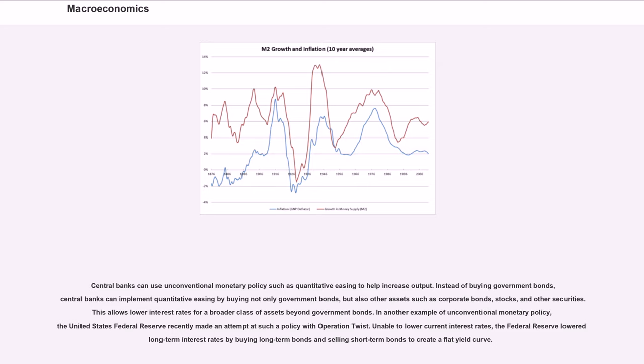In another example of unconventional monetary policy, the United States Federal Reserve recently made an attempt at such a policy with Operation Twist. Unable to lower current interest rates, the Federal Reserve lowered long-term interest rates by buying long-term bonds and selling short-term bonds to create a flat yield curve.